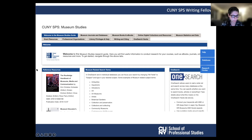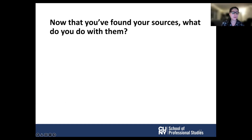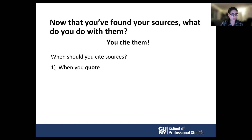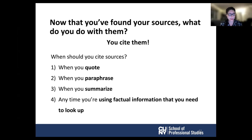CUNY SPS Museum Studies also has its own research page — you'll click on Research Guides. Now that you've found your sources, you must give citations for each source that you use and where it came from. There are four situations where you should cite sources: when you quote, paraphrase, or summarize another source, and when you mention factual information that you had to look up.